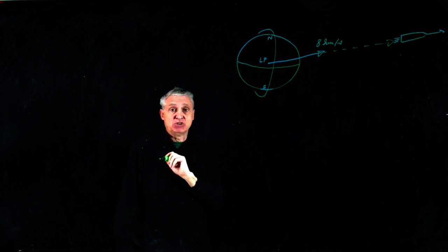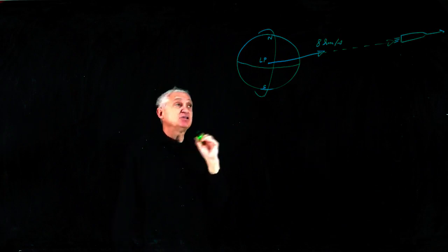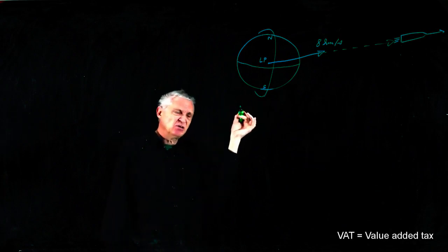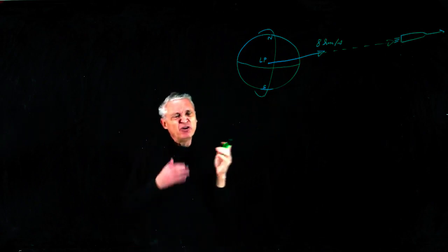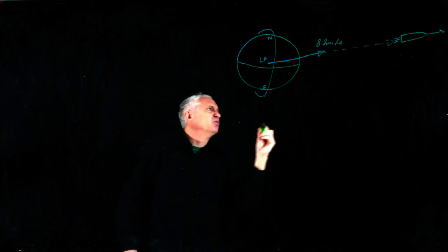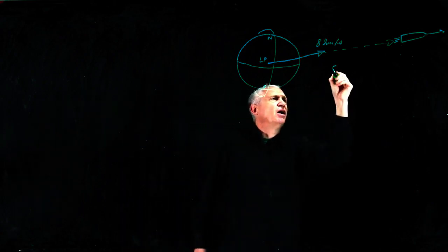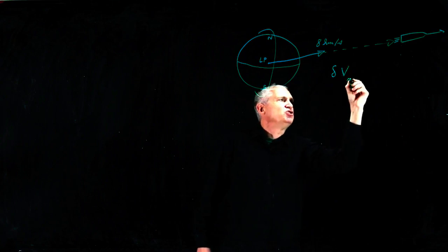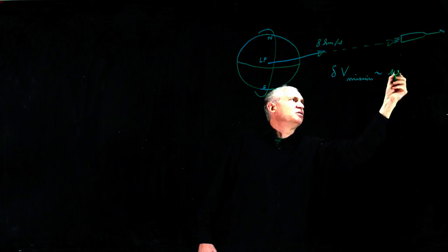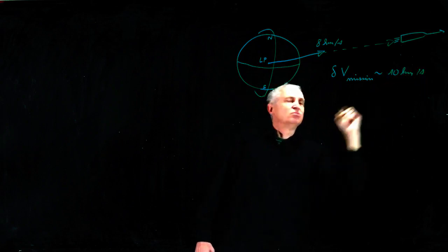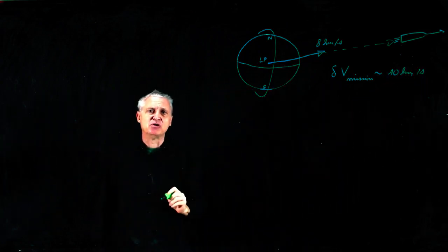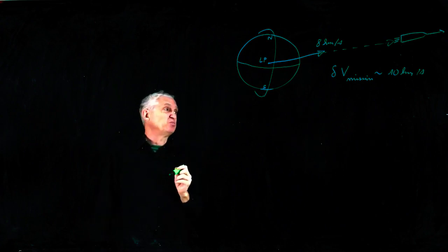But the basic cost to go to space, including the V-80, all the imperfect things in the launch, which is about the delta V mission, which is 10 kilometers per second. Well, that's the cost to pay to go to space, the access to space.